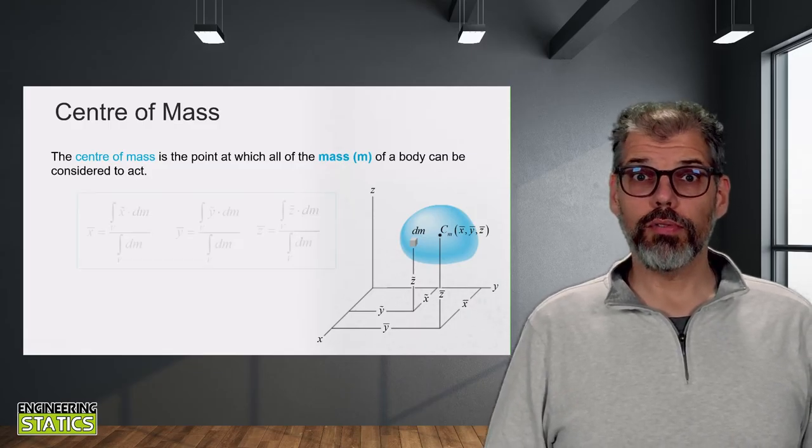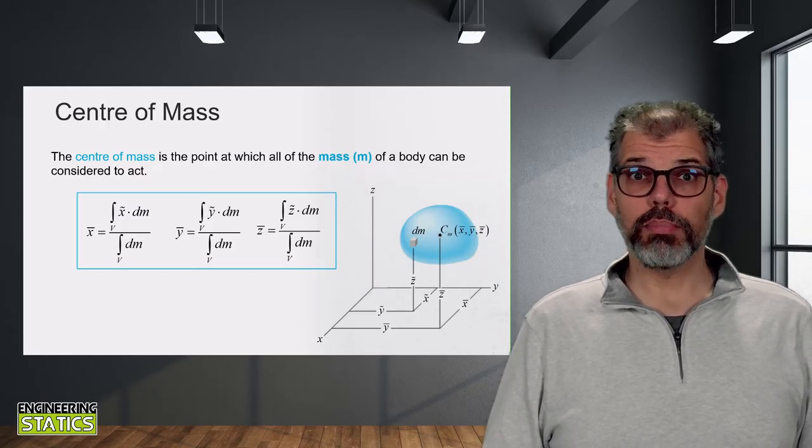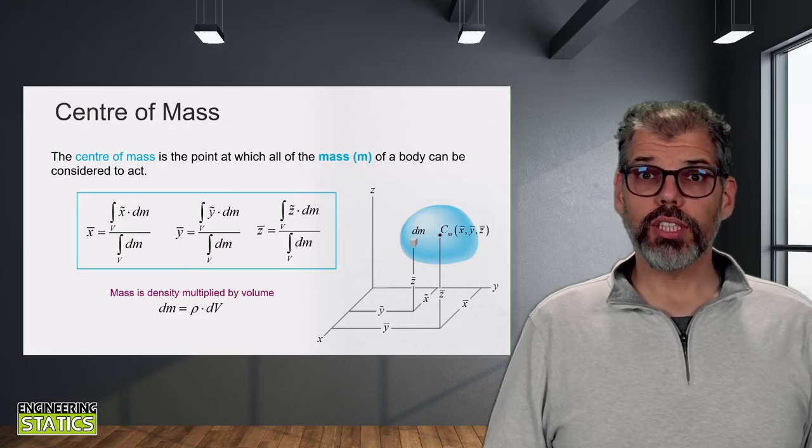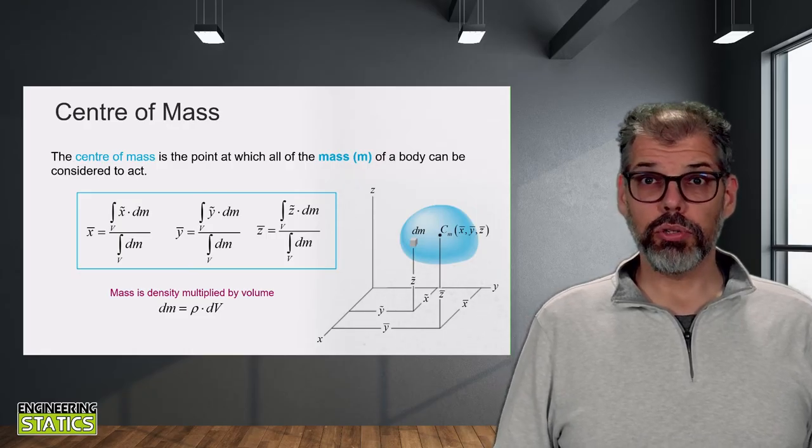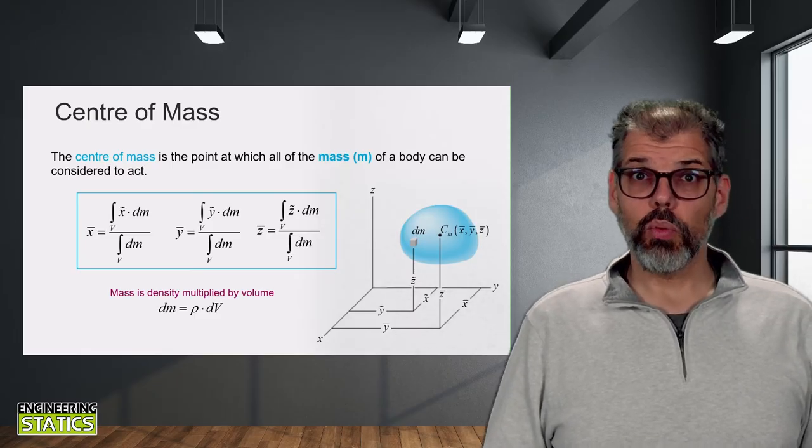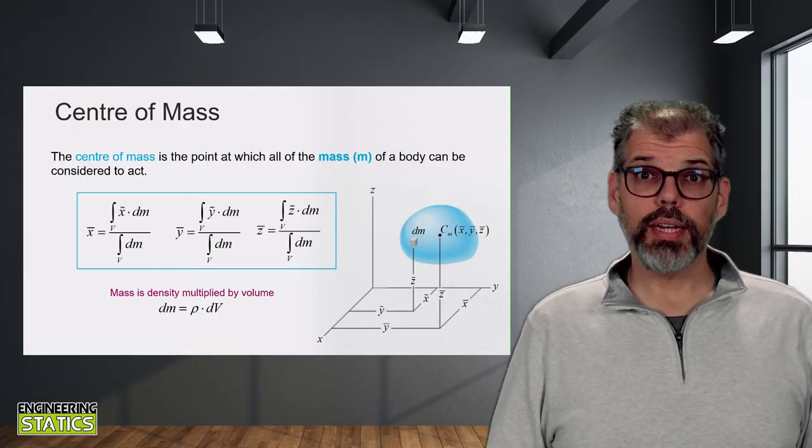So the weighting variable for our averaging changes from volume to mass. Mass is simply the density times volume. Now you may ask yourself, isn't this the same as the centroid? And it is under very specific conditions, when the body has a uniform density. However, that is generally not the case.